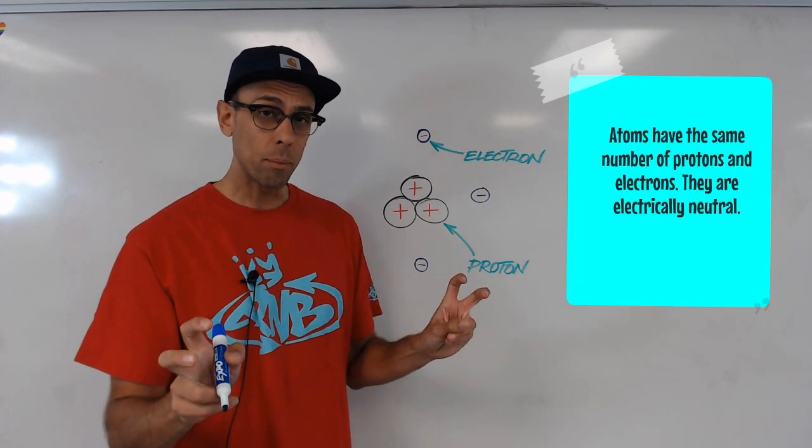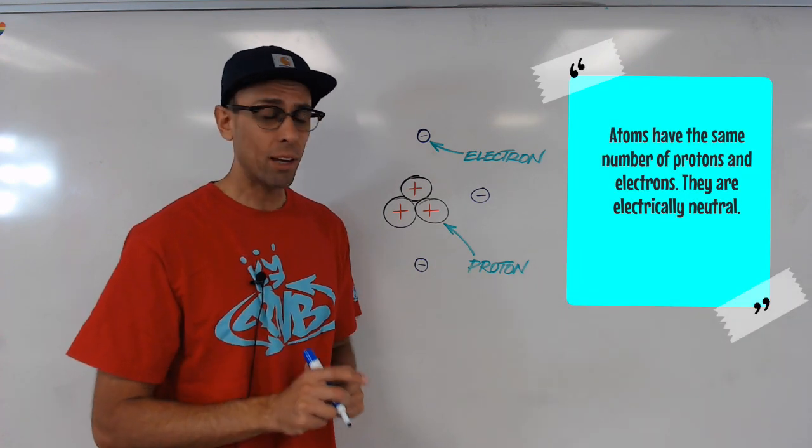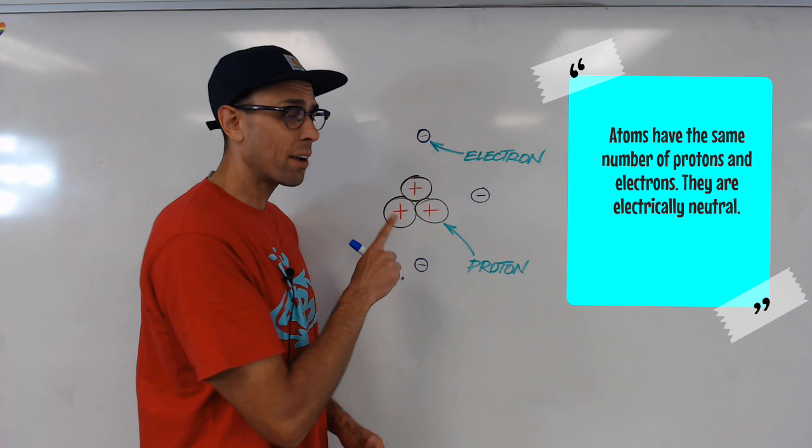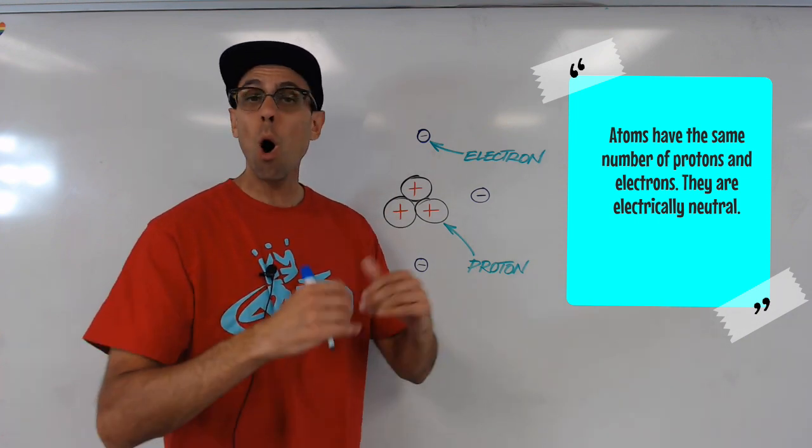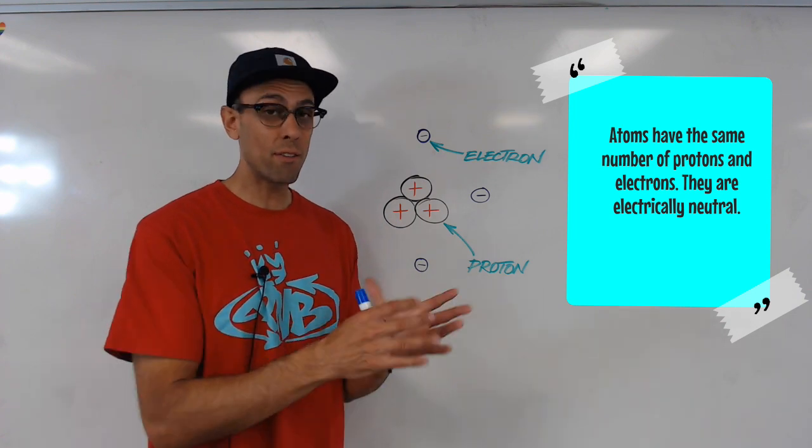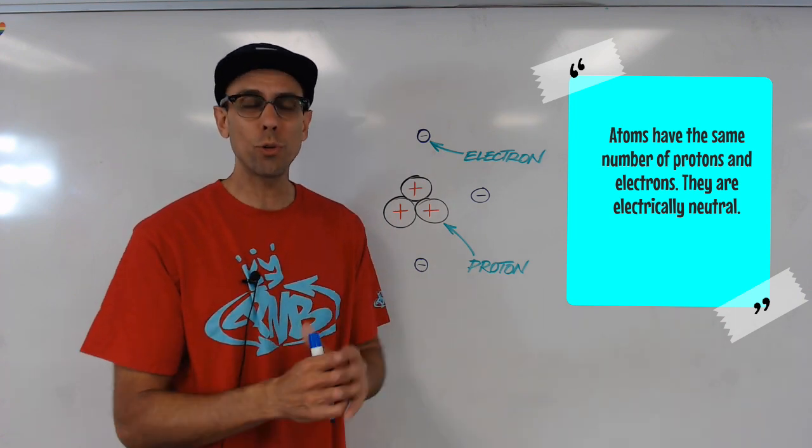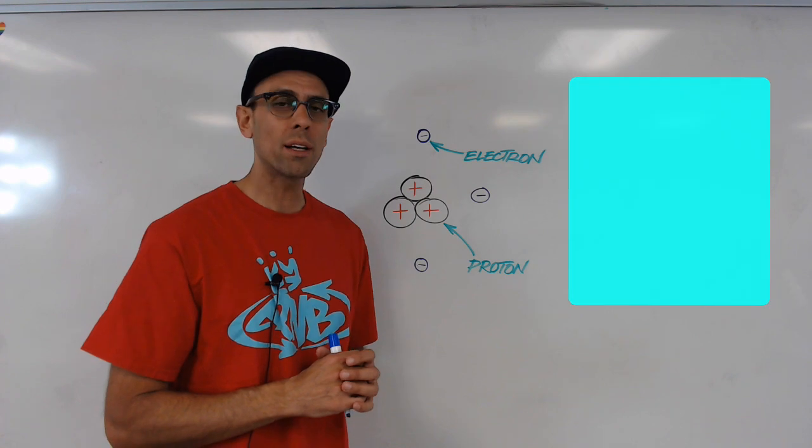So this lithium atom is neutral, meaning for every positive charge, there is one negative charge such that the charges cancel out. Now all atoms in the universe, if given the name atom, are neutral. They have the same number of protons and electrons.